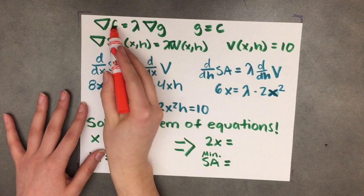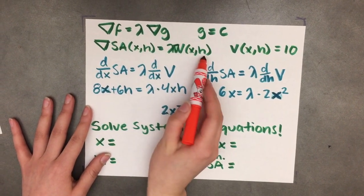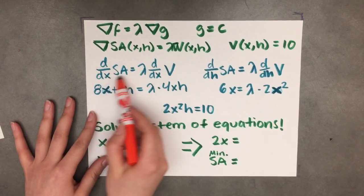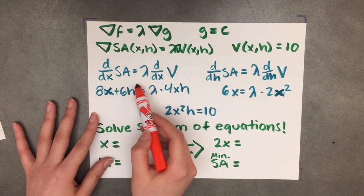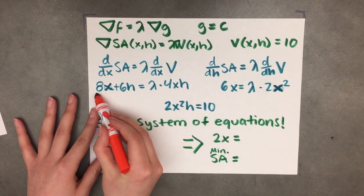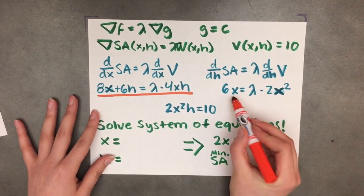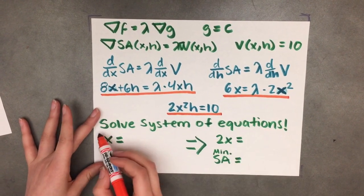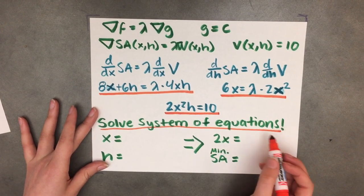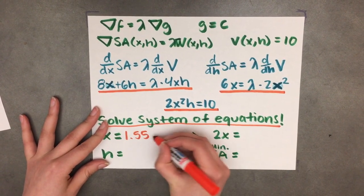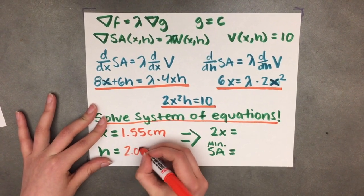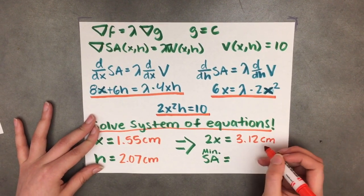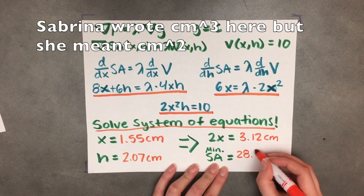Here are the Lagrange multiplier equations and the versions specific to this problem. The gradient of the surface area is equal to a proportionality constant times the gradient of the volume. These parts represent the x and h partial derivatives. We also have the constraint equation where the volume is set equal to 10. Solving this system of equations gives us the width of our candy, the height of our candy, and using that information we can find the length and the minimum surface area.